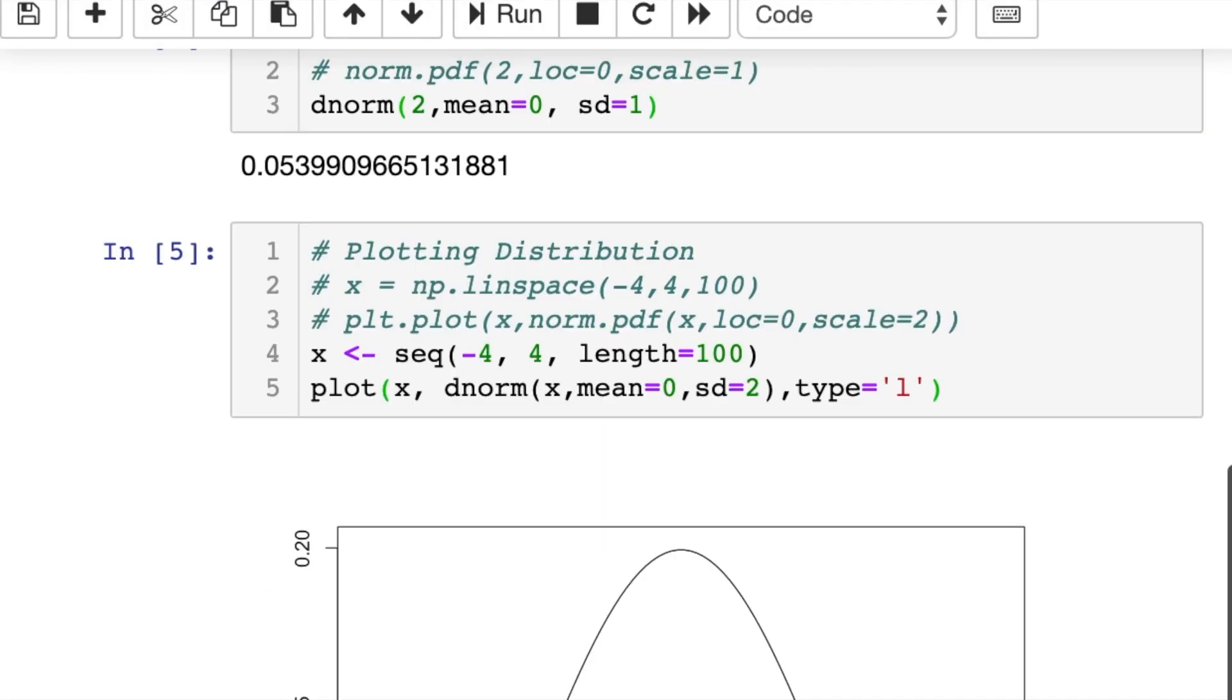Nice, beautiful plot. So what we do is we create a domain with x is equal to a sequence from negative 4 to 4 with length equals 100, and then we do plot of our domain against our function dnorm with x plugged into it, mean equals 0, standard deviation equals 2, just for this example. And in R, you have to specify that you want the type to be a line.